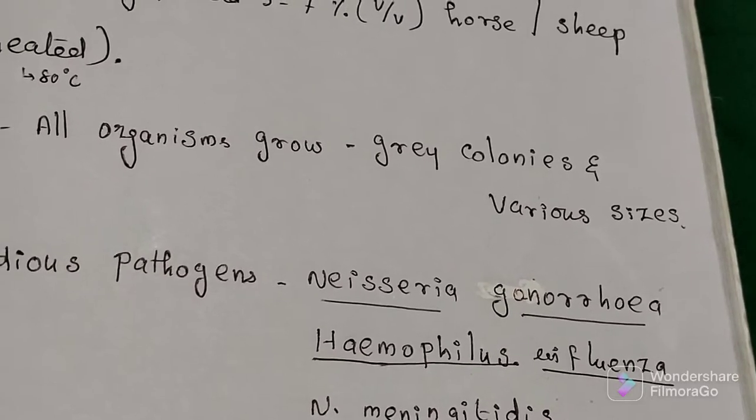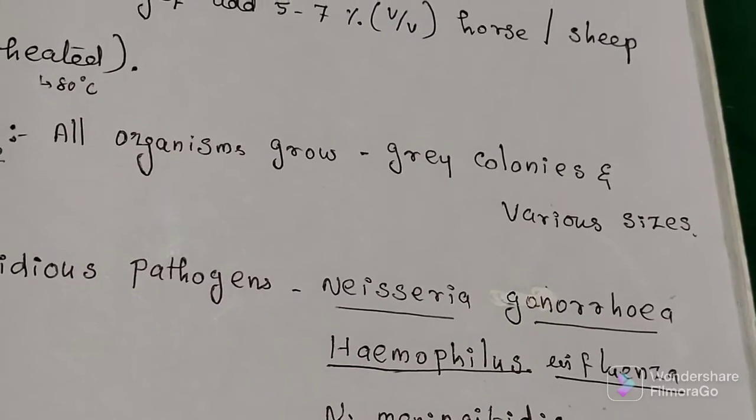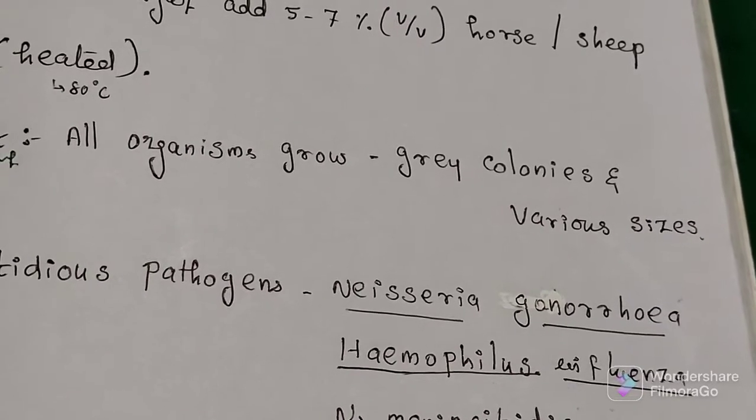Then Haemophilus influenzae produces non-hemolytic colorless colonies. It will produce on chocolate agar plate.